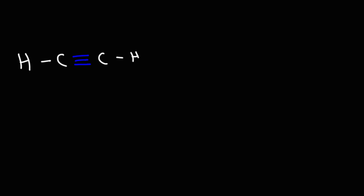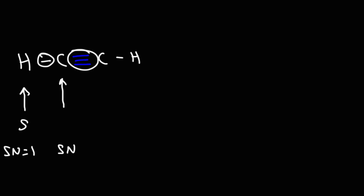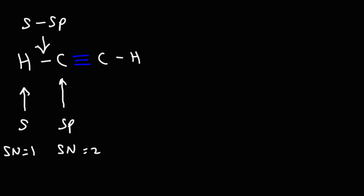Now determine the steric number and hybridization of the carbon and hydrogen atoms in acetylene, and the orbital overlap in the C–H bond. Hydrogen has an s orbital with a steric number of 1. The carbon has two sigma bonds, giving a steric number of 2 and sp hybridization. So the orbital overlap of the C–H bond is an overlap of an s orbital and an sp hybrid orbital. We can't say the s orbital is hybrid because it's pure s.